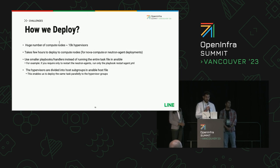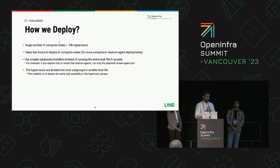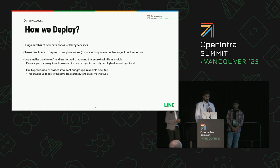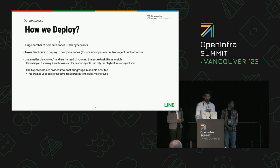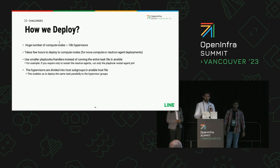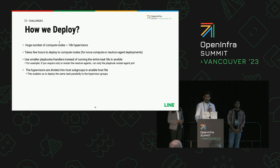The next set of challenges we face at our company is when we try to deploy our changes to the large number of hypervisors in our cloud. Usually it takes a few hours for any small change to deploy to all our compute nodes. We cannot completely eliminate the time factor, but we can reduce it. We have used steps like using smaller playbooks in Ansible or handlers instead of running the entire task file, or dividing the set of compute hosts into smaller subgroups and using them in the Ansible host file.